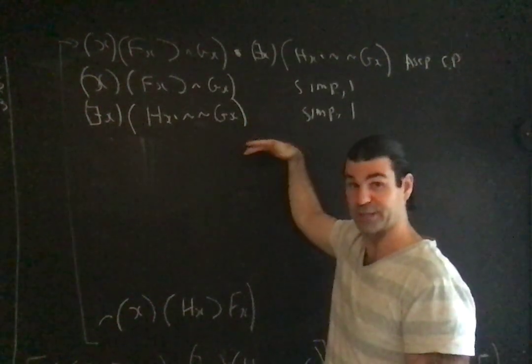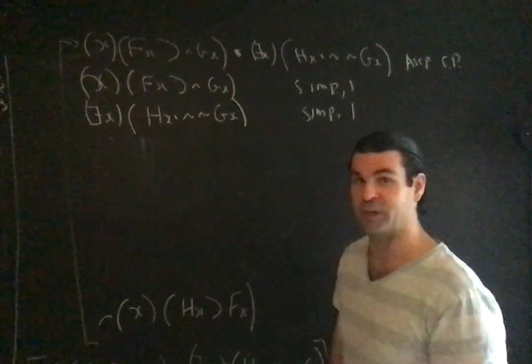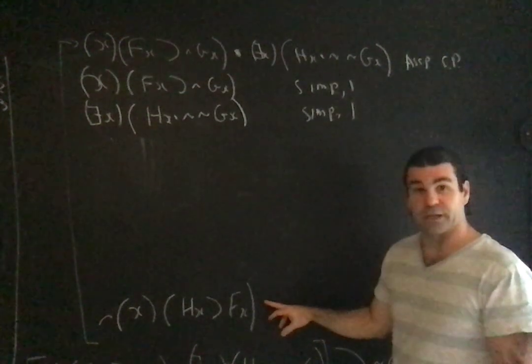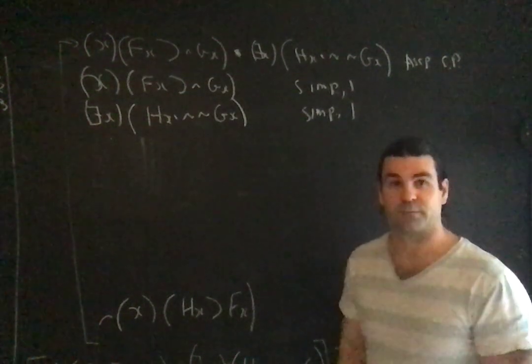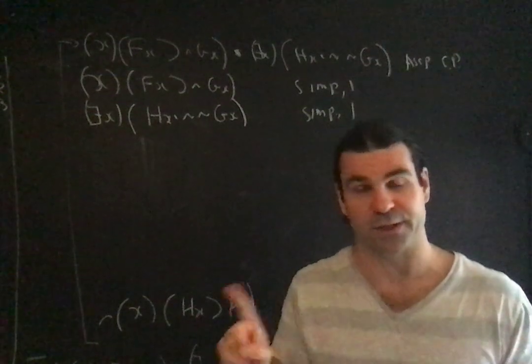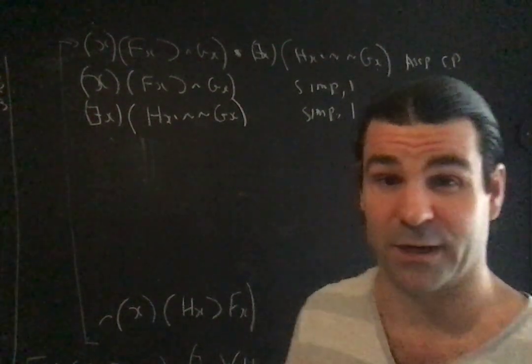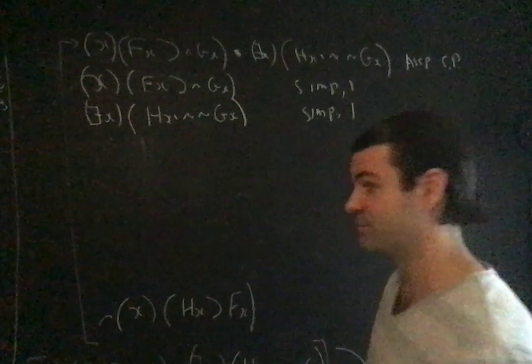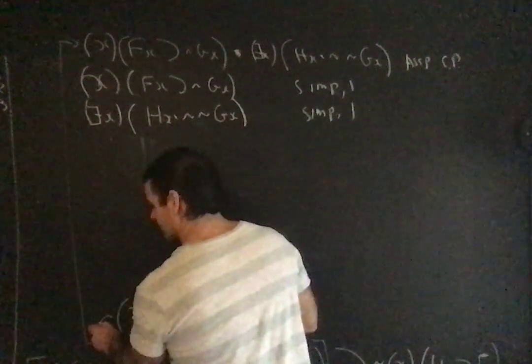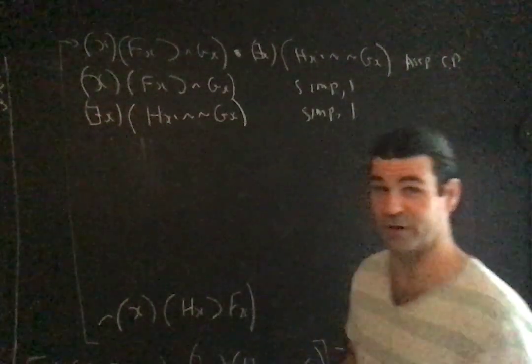And now you do have two formulas which are in quantifier form. These formulas you can instantiate and will instantiate from. Now the conclusion is not in quantifier form. Why not? It begins with a negation. If it begins with a negation, it cannot begin with a quantifier. If it doesn't begin with a quantifier, it's not in quantifier form. Beginning with a quantifier is the first of the two conditions being in quantifier form.